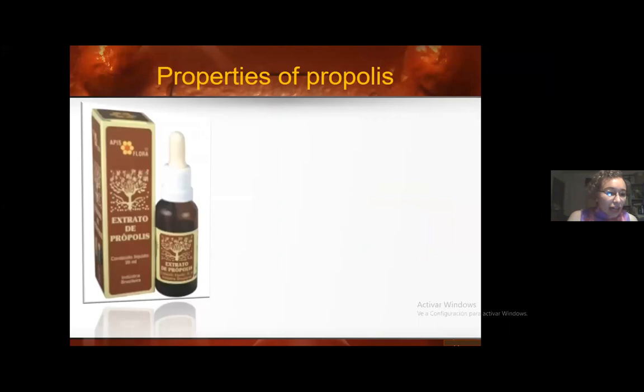Until now, numerous investigations have been carried out on the effect of propolis on cells in the planktonic state, but scarcely on bacteria organized in biofilms. Propolis is a resinous and complex apiculture product with a variable physical appearance, collected and transformed by honeybees. The bee secretes beta-glucosidase during collection and processing of propolis, hydrolyzing the heterosides from flavonoids to aglycones, improving the pharmacological action of the product and producing physicochemical changes.